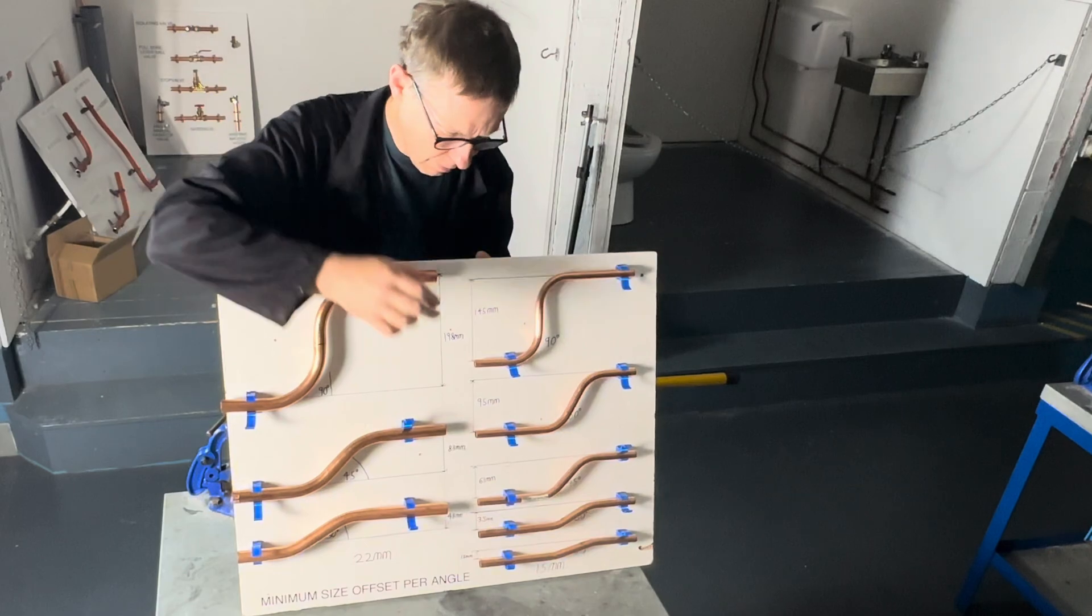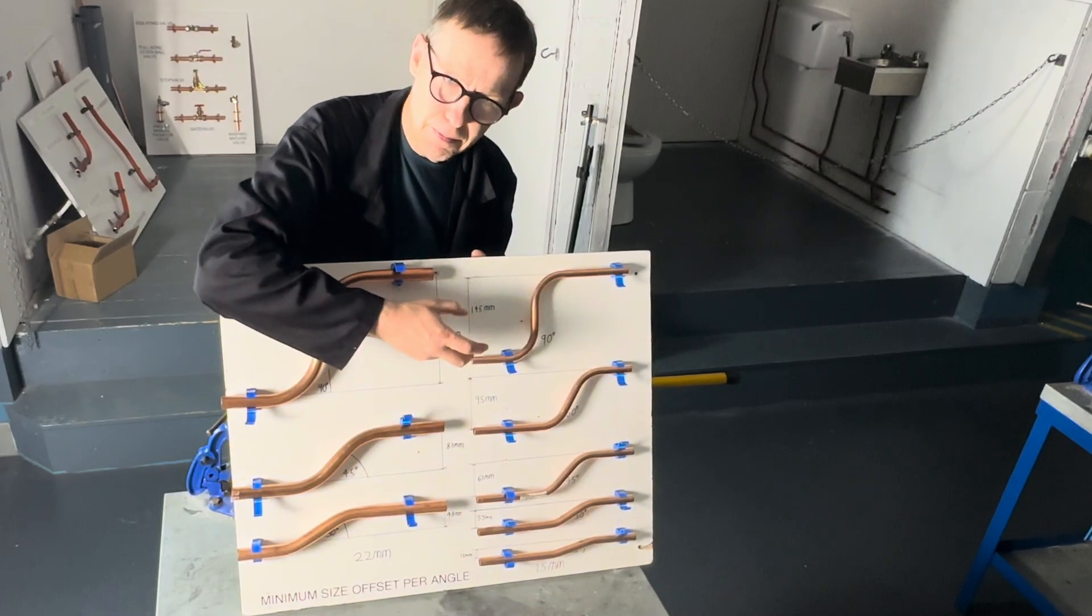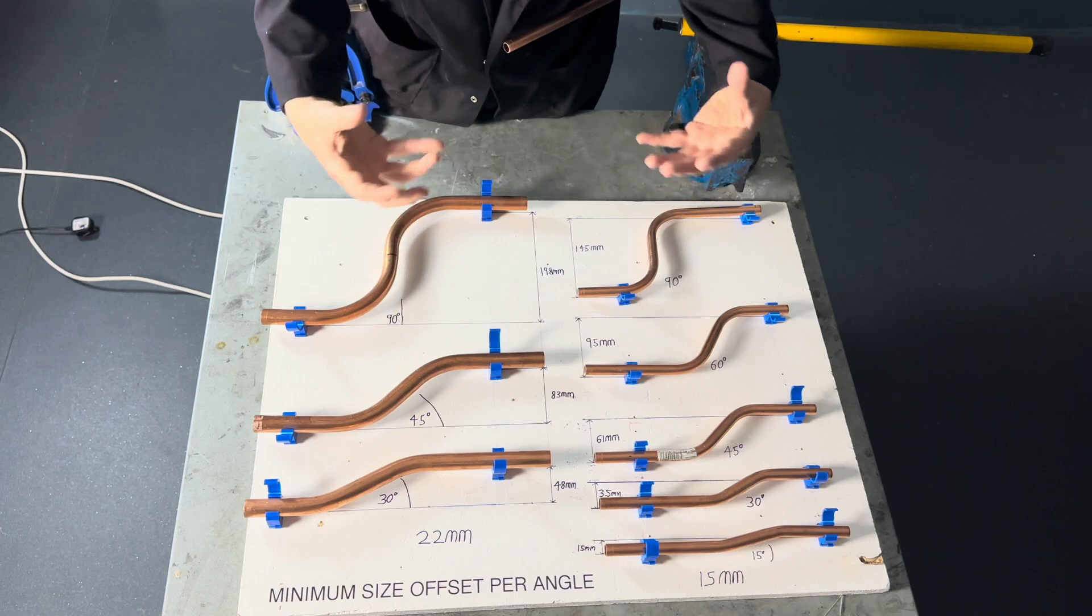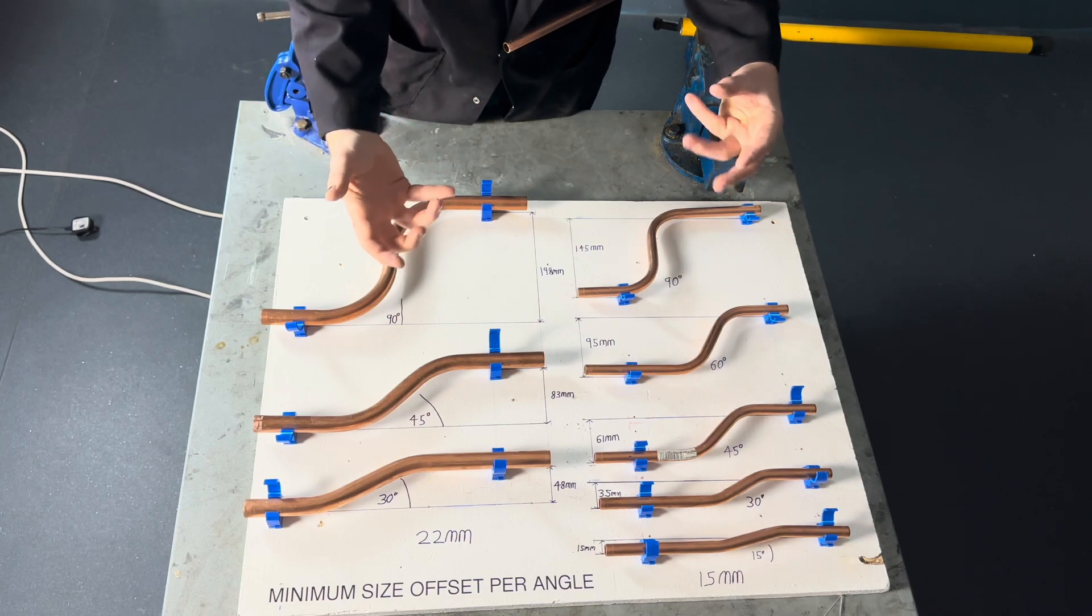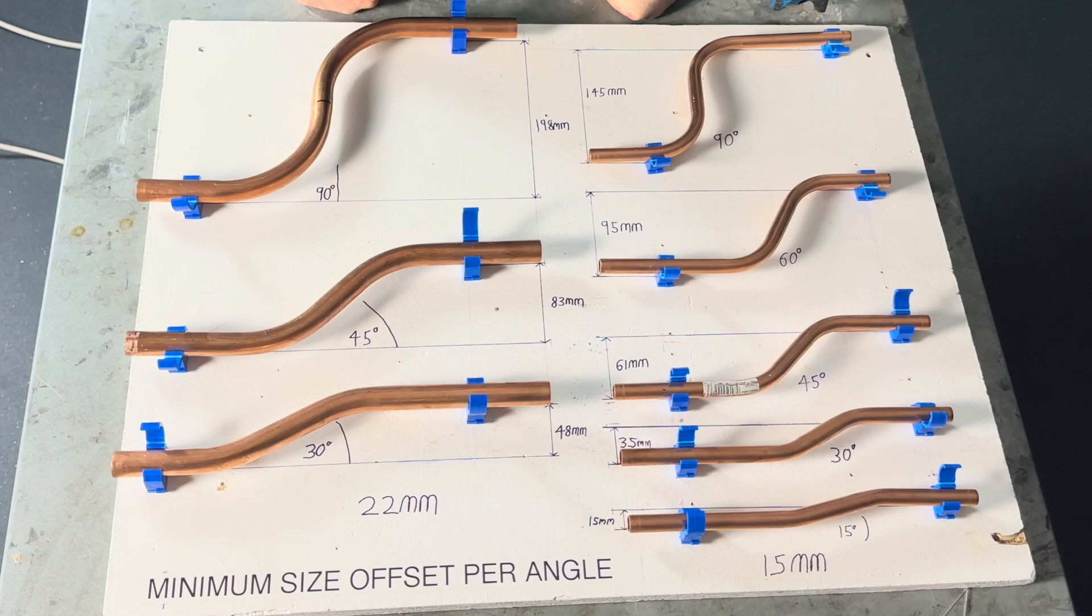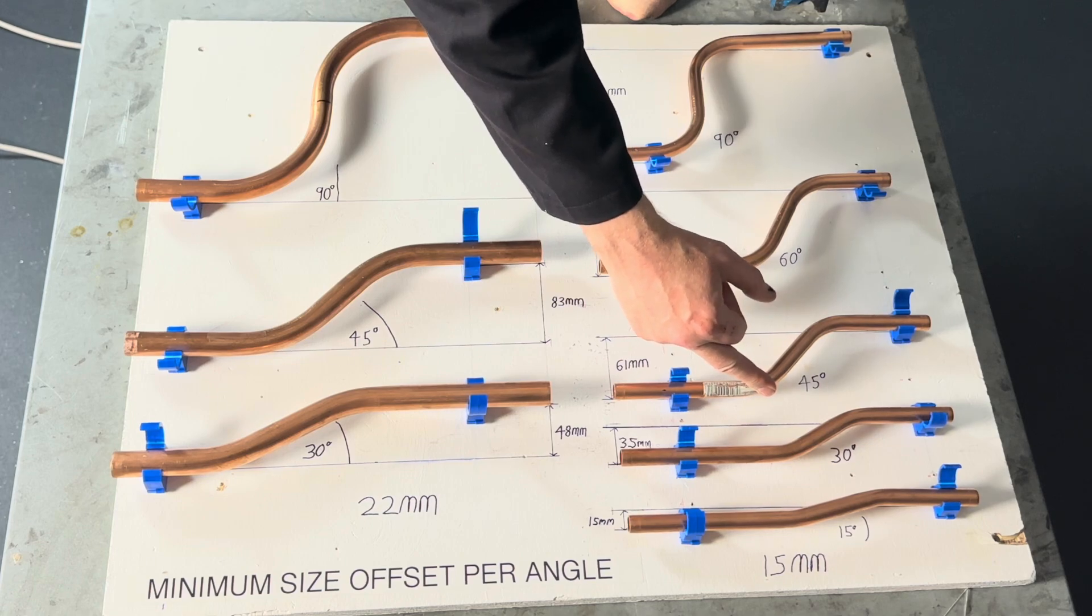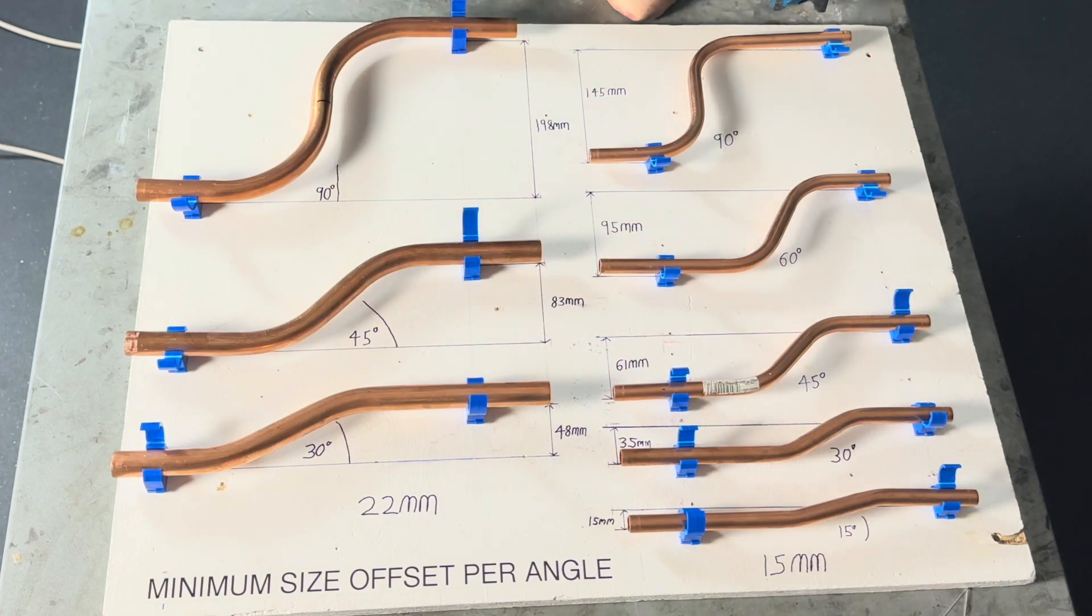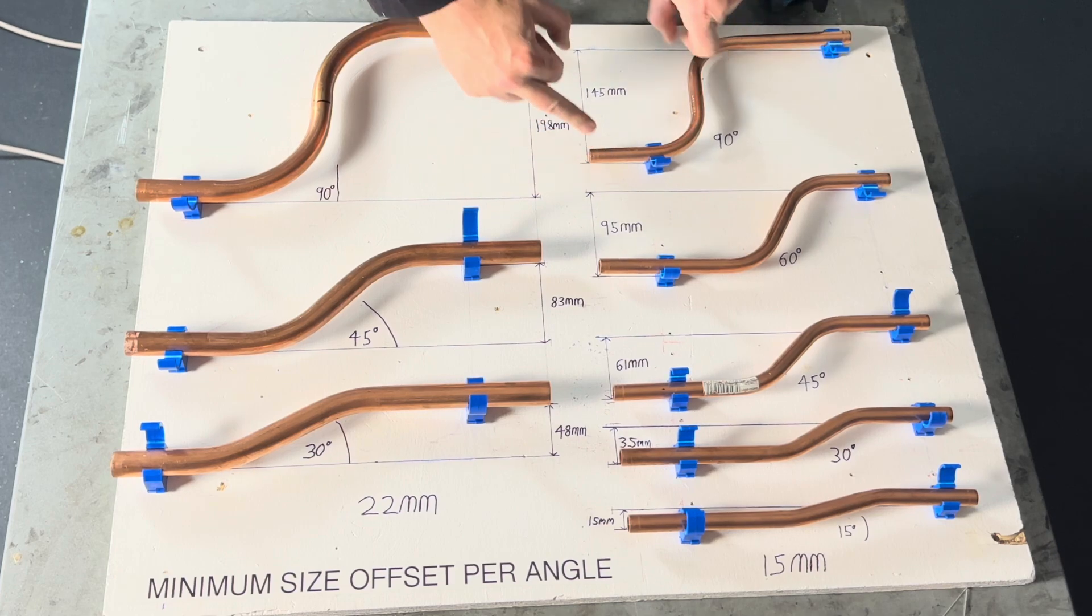To get you started, I've put together the most common bent angles and the minimum offset you can get by bending to them angles. So this is quite a useful display board. But after a while, you'll just know by instinct what bends to do for what offset. So for example, if I bent my pipe 45 degrees through an offset, the smallest offset I could achieve would be 61 mm. Or if I wanted to bend an offset 90 degrees, the smallest centre to centre offset would be 145 mm.